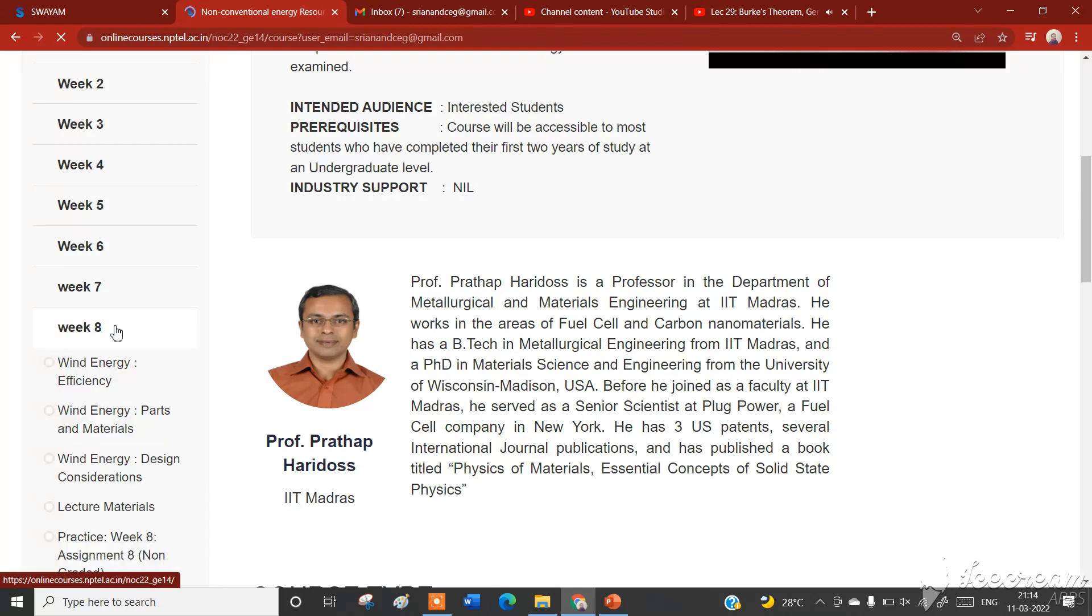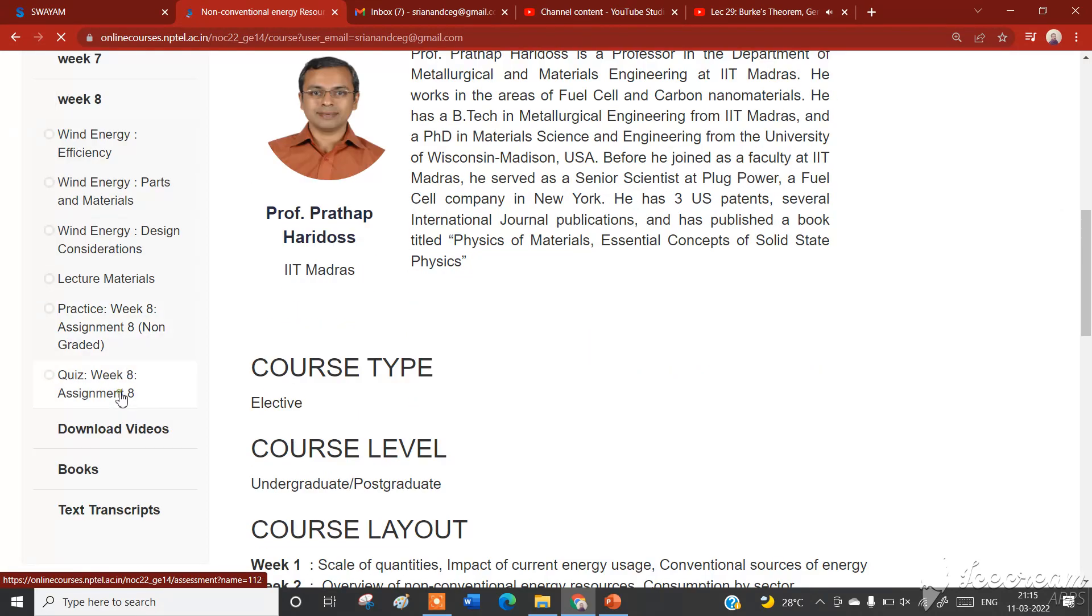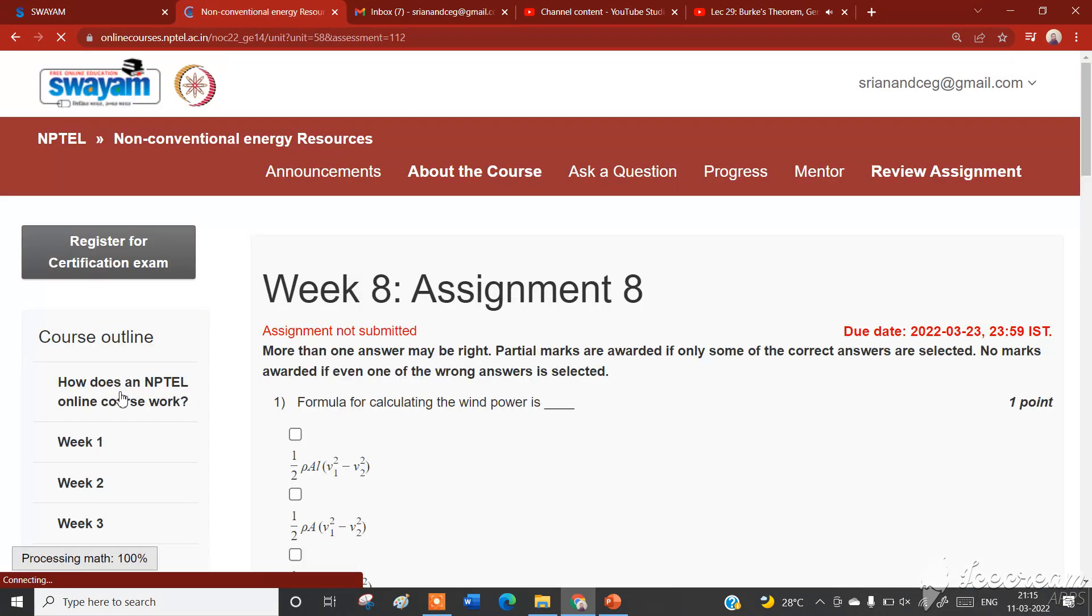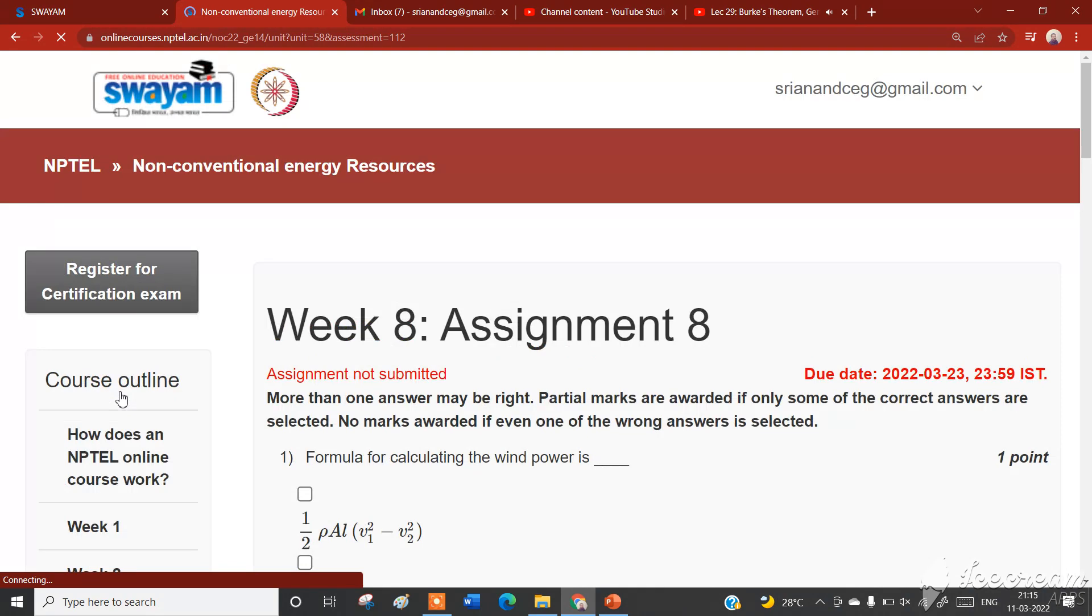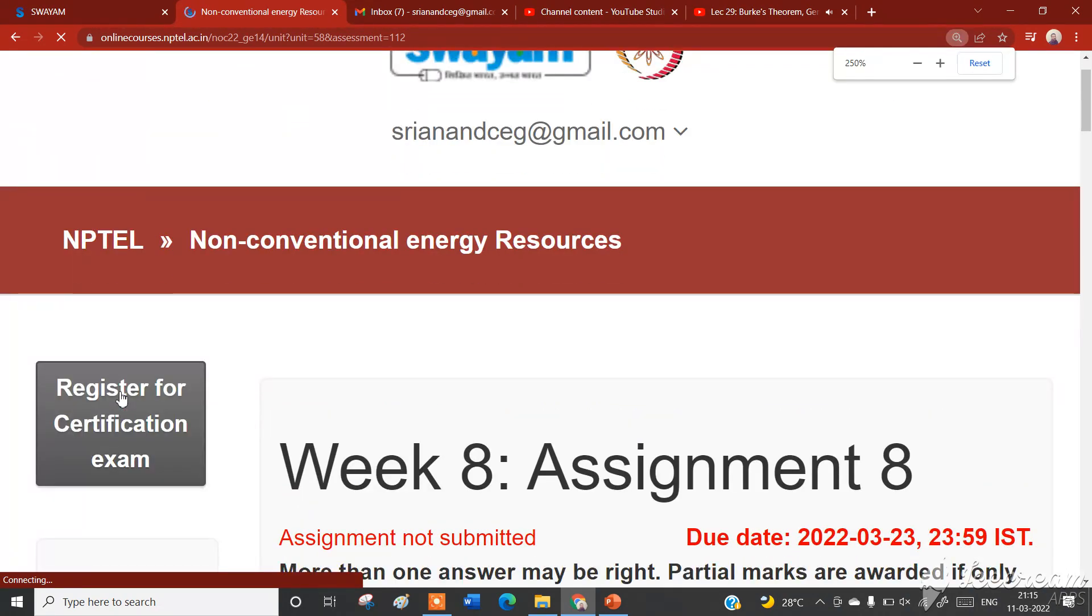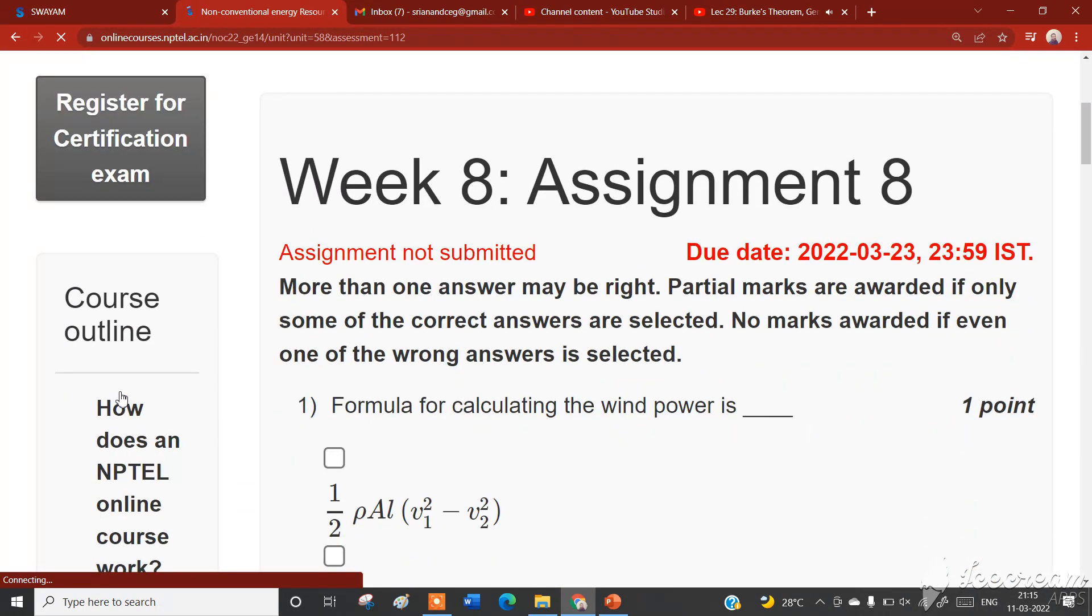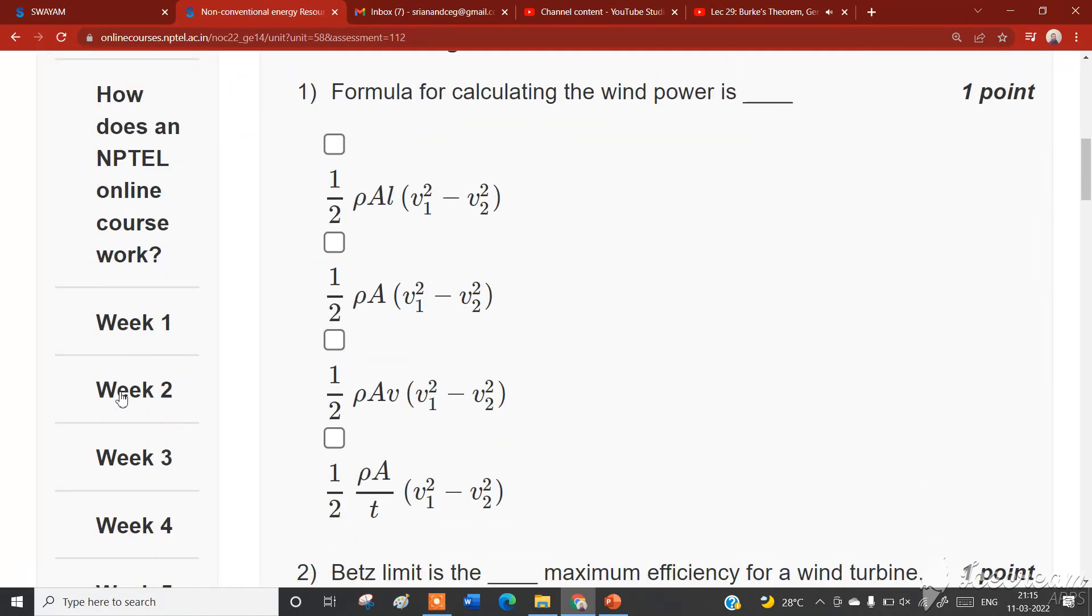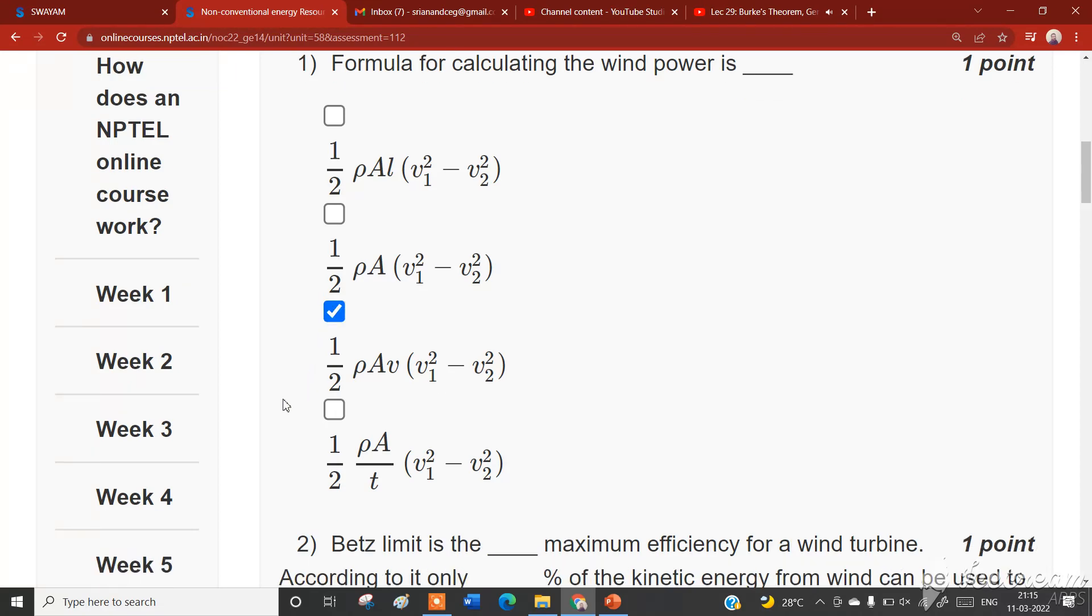Now whether that is true can be proved if we can characterize the output process from the first node. If it turns out the output process can be characterized, then this result can actually be proved true. It is not just a mere observation with respect to this particular system, but in general it has to be true. Burke's theorem is what helps us to do this.